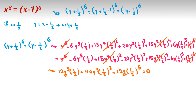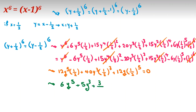Simplifying the coefficients: 12 over 2 gives 6, so we have 6y⁵; 40 over 8 gives 5, so we have 5y³; and 12 over 32 gives 3 over 8, so the last term is 3/8·y. The equation becomes 6y⁵ plus 5y³ plus 3/8·y equal to zero.